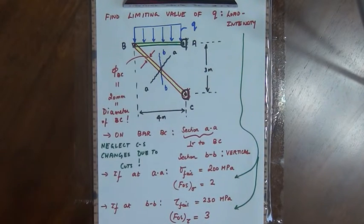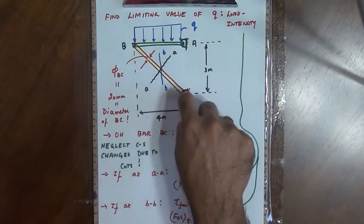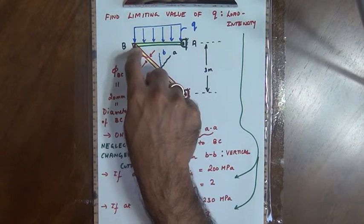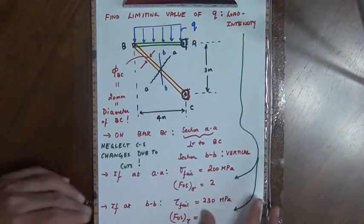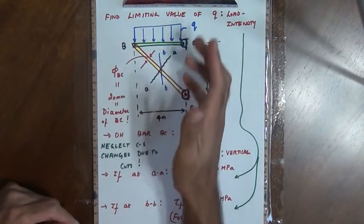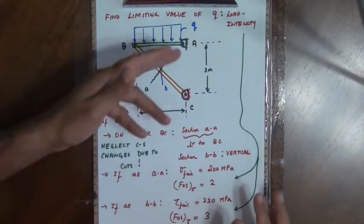Since this is a frame, we consider whether we need all support reactions. Since we are focusing only on bar BC, it is sufficient to find only the force along bar BC. Bar BC has forces only at points B and C, making it a two-force member. At pin B, bars AB and BC are connected with no other forces, so the forces at the two points on bar AB and BC must be equal and opposite. We will draw the free body diagrams of bars BC and AB.